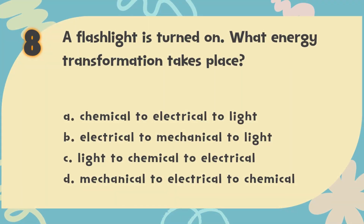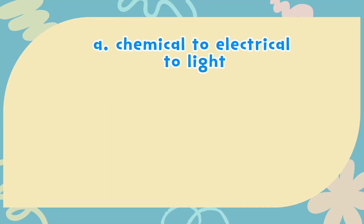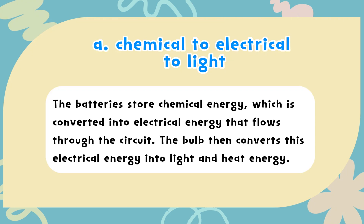The correct answer is A. Chemical to electrical to light. The batteries store chemical energy, which is converted into electrical energy that flows through the circuit. The bulb then converts this electrical energy into light and heat energy.